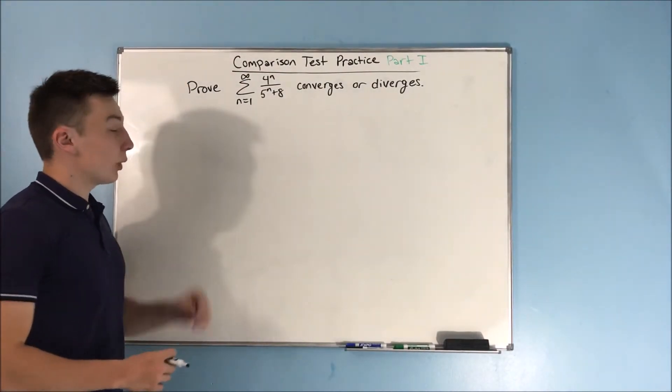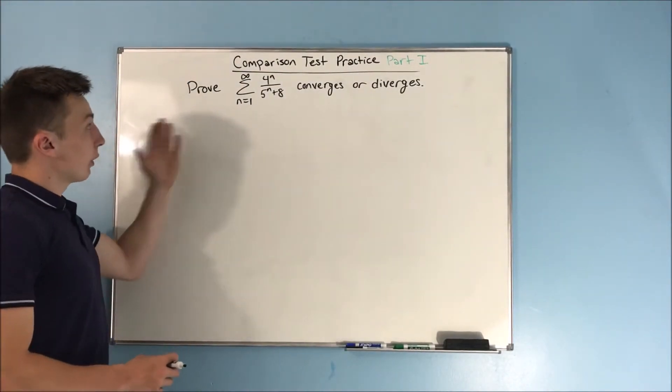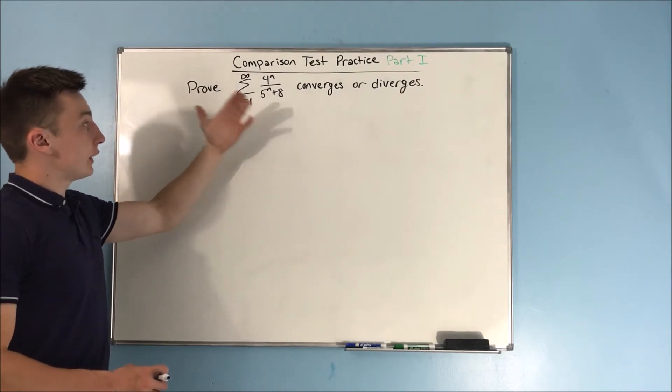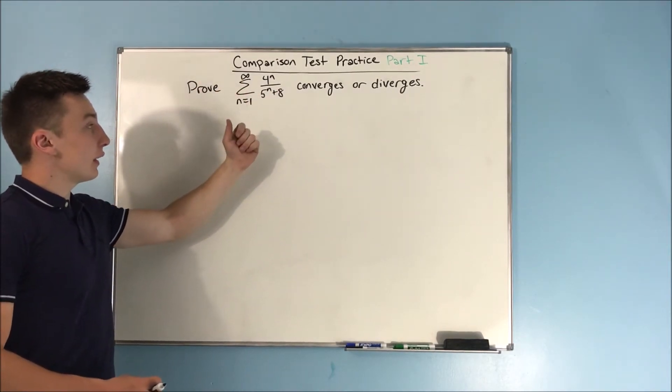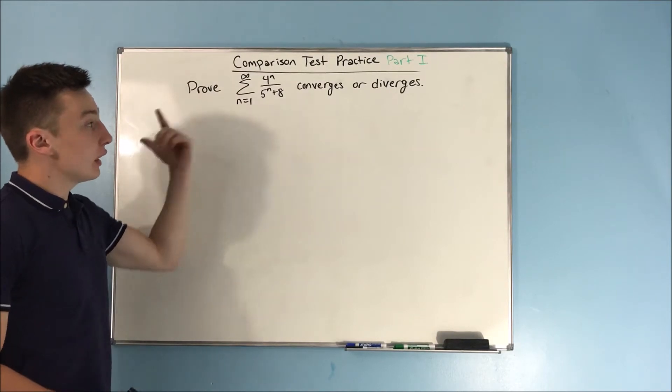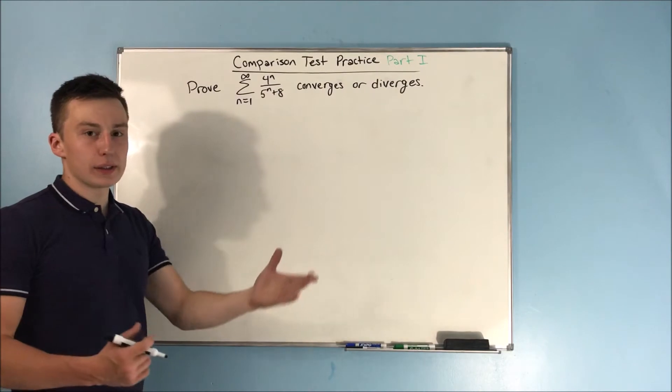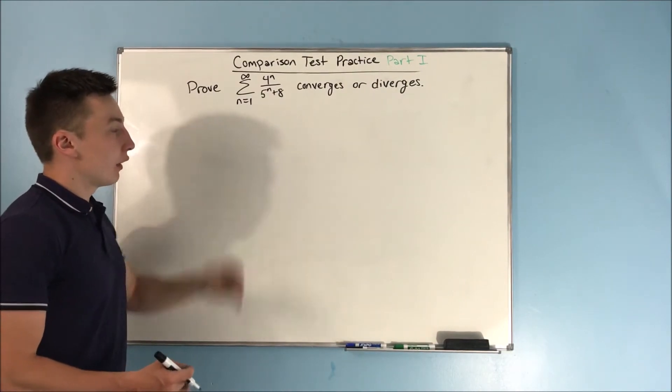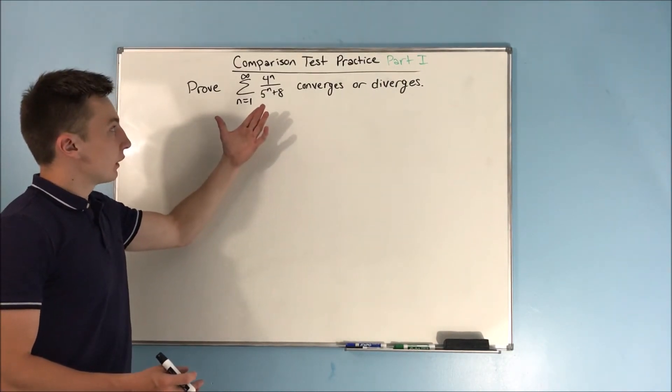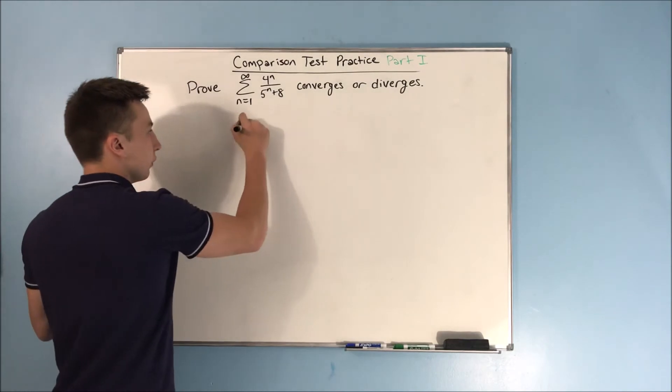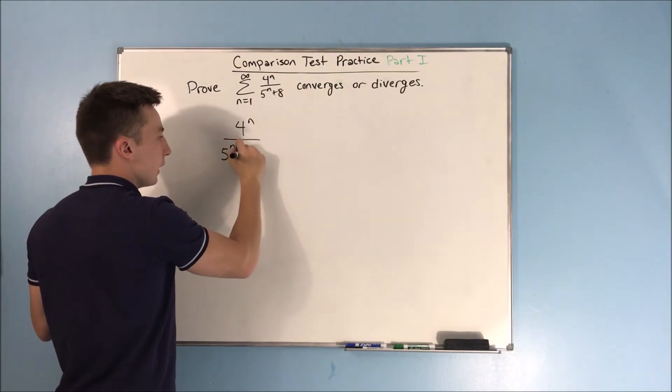So now, same question, different series. We want to prove that this series here, the sum from n equals 1 to infinity of 4 to the n over 5 to the n plus 8 converges or diverges. We're using a comparison test here. But what does this look like to you? We have 4 to the n over 5 to the n plus 8.